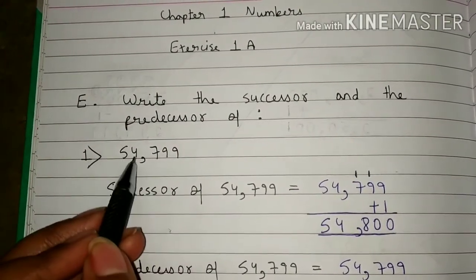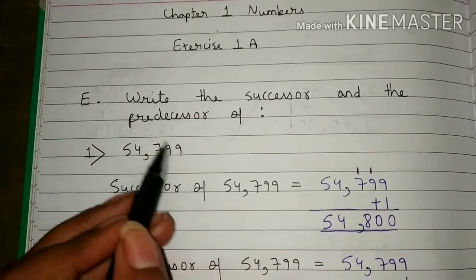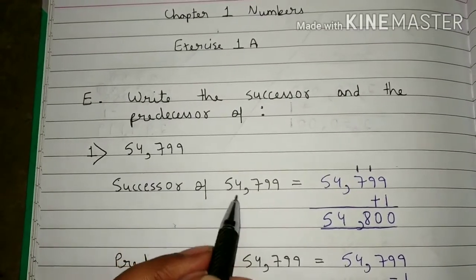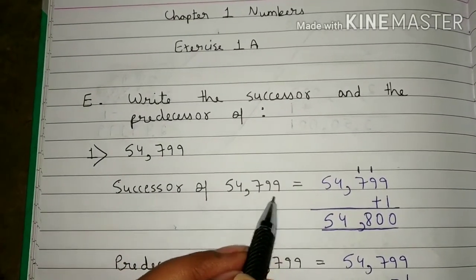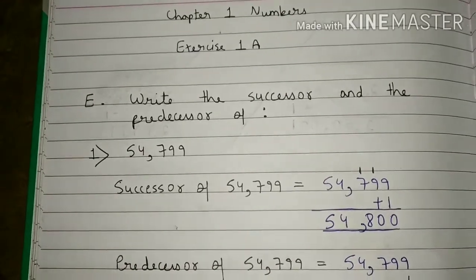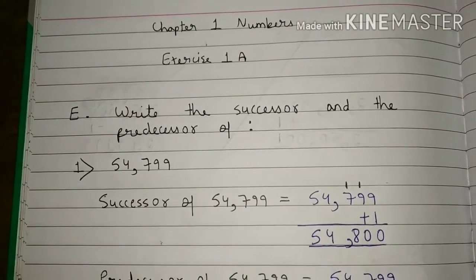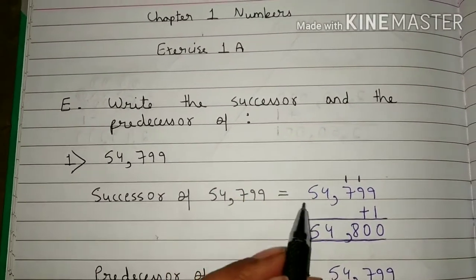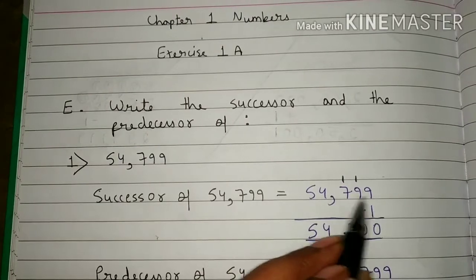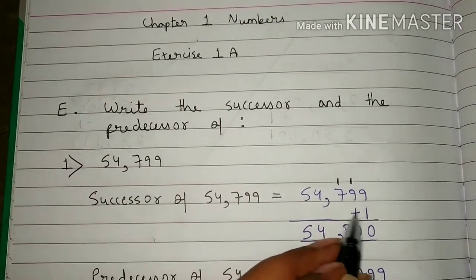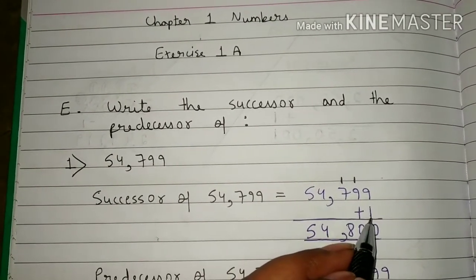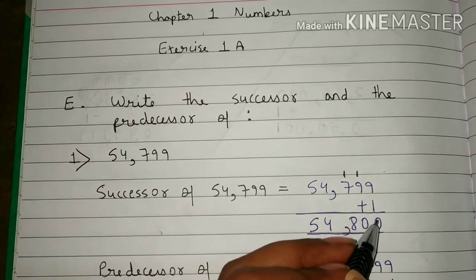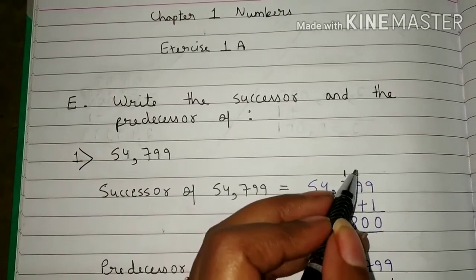The first number is 54,799. First of all, you will write the successor of 54,799. I have told you that for successor, you have to add 1 to the number. So you will write 54,799 here and then write plus 1. Now add the numbers: 9 plus 1 is 10, so you will write 0 here and carry 1.